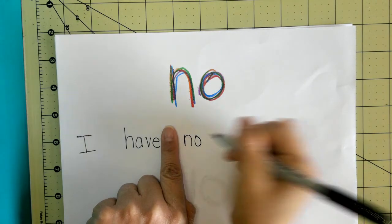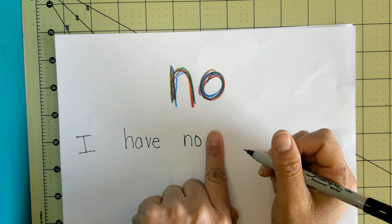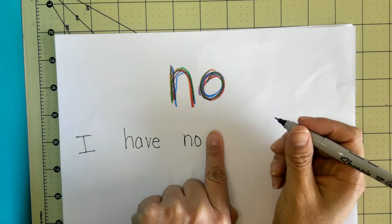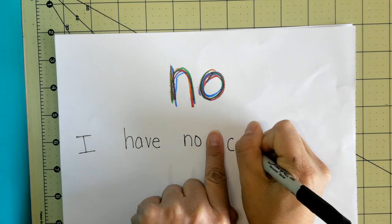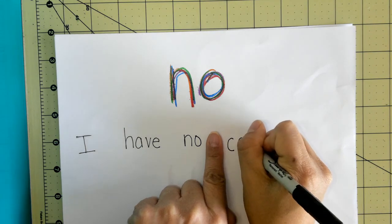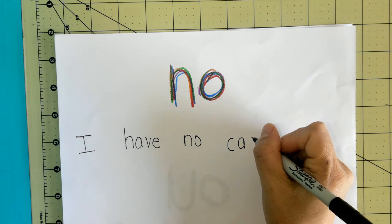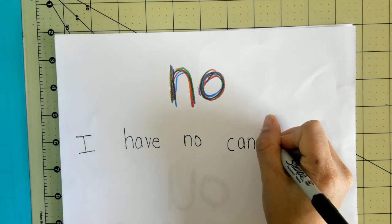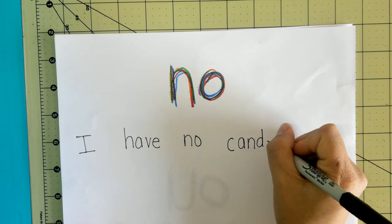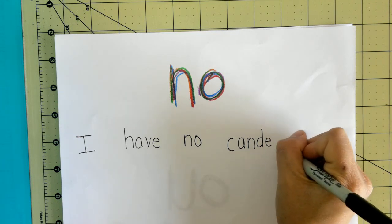N-O. Fingerspace candy. We're going to sound it out. It's okay if we don't spell it correctly. We're going to sound out what we hear. C-A-N-D-D. I have no candy. Put an E at the end. Okay, period.